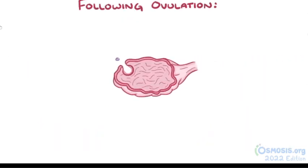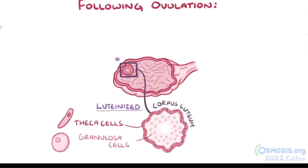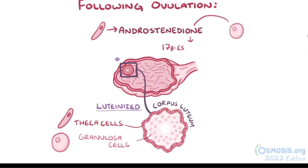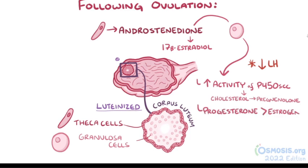Following ovulation, the remnant of the ovarian follicle becomes the corpus luteum, which is made up of luteinized theca and granulosa cells — meaning these cells have been exposed to the high luteinizing hormone levels that occurred just before ovulation. Luteinized theca cells keep secreting androstenedione, and the luteinized granulosa cells keep converting it to 17-beta-estradiol. However, luteinized granulosa cells also respond to the low LH concentrations present after ovulation by increasing the activity of cholesterol side-chain cleavage enzyme, or P450SCC, which converts more cholesterol to pregnenolone, a progesterone precursor. So luteinized granulosa cells secrete more progesterone than estrogen during the luteal phase.